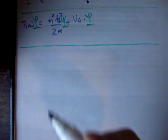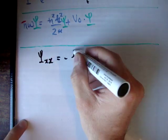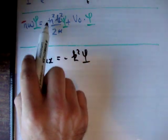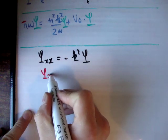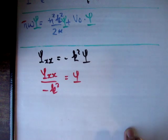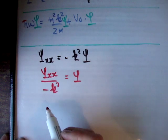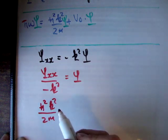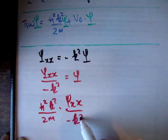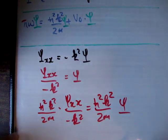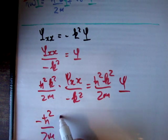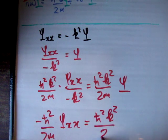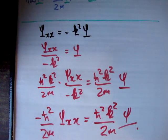The next thing is the second derivative with respect to x. We know ψ_xx equals negative k squared times ψ, so ψ equals ψ_xx over negative k squared. We want h-bar squared k squared over 2m times ψ. Multiplying through by h-bar squared k squared over 2m and doing cancellations, we find that negative h-bar squared over 2m times ψ_xx equals h-bar squared k squared over 2m times ψ. So we've found all our pre-factors.